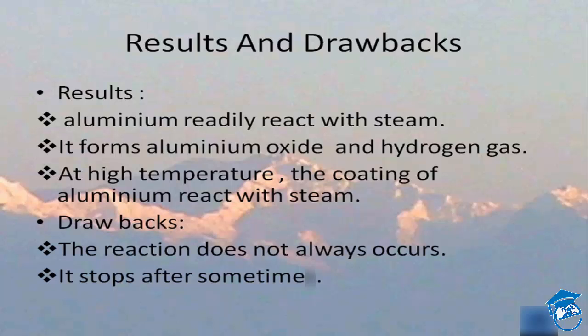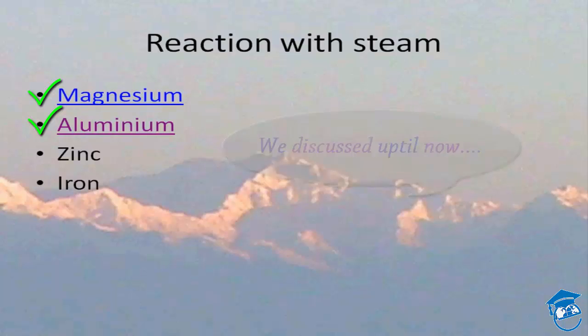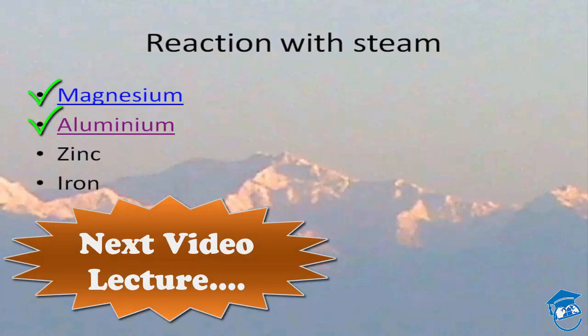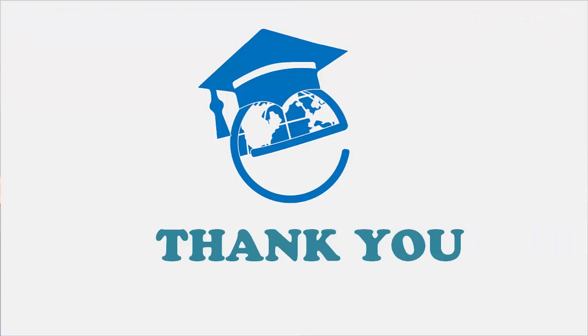This is how aluminium reacts with steam and generates hydrogen gas, but we naturally do not prefer this kind of experiment to liberate hydrogen gas. We have covered magnesium and aluminium, and in the next session we will learn how zinc reacts with steam to get zinc oxide and the main product we want, which is hydrogen gas. Let's meet in the next session — thank you for watching Edupedia World videos.